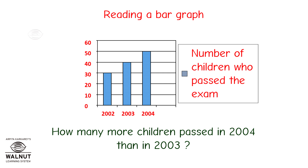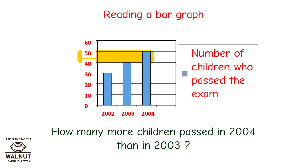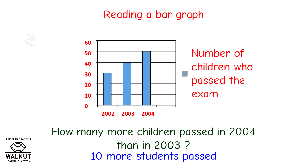How many more children passed in 2004 than in 2003? We have to find the difference in the students of 2004 and 2003. So first we locate the bars — this is the bar of 2004 and this one is for 2003. We have to find the difference in the values of these bars. It is 50 minus 40, which is 10. So 10 more students passed.